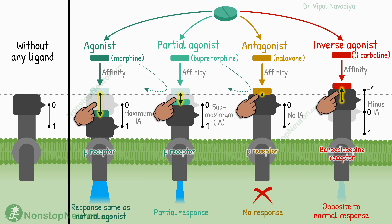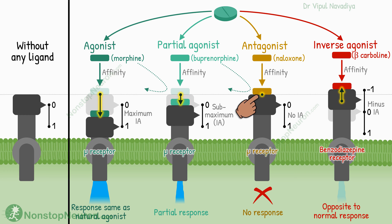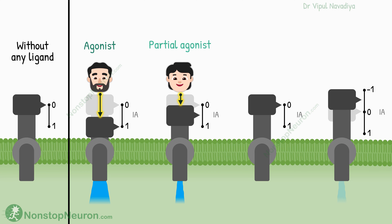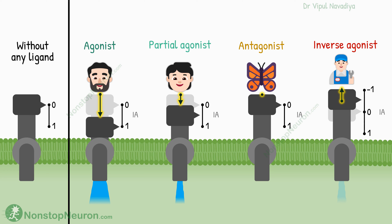As a quick summary: agonist activates the receptor fully; partial agonist activates it partially; antagonist does not do anything; and inverse agonist inactivates constitutively active receptors. Using our tap analogy: agonist is a strong man who can press the button fully; partial agonist is a kid who can press it only partially; antagonist is a butterfly who can sit on the tap but cannot press it; and inverse agonist is a plumber who closes the leaky tap. When any of them occupies the tap, the others cannot work on it.